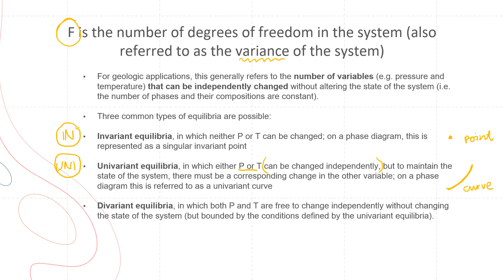Last but not least, we have the divariant equilibria, in which both pressure and temperature are free to change independently without changing the state of the system. For divariant equilibria, you can change both pressure and temperature. This is a region bounded by the conditions defined by the univariant equilibria — those bounded regions are your divariant fields.